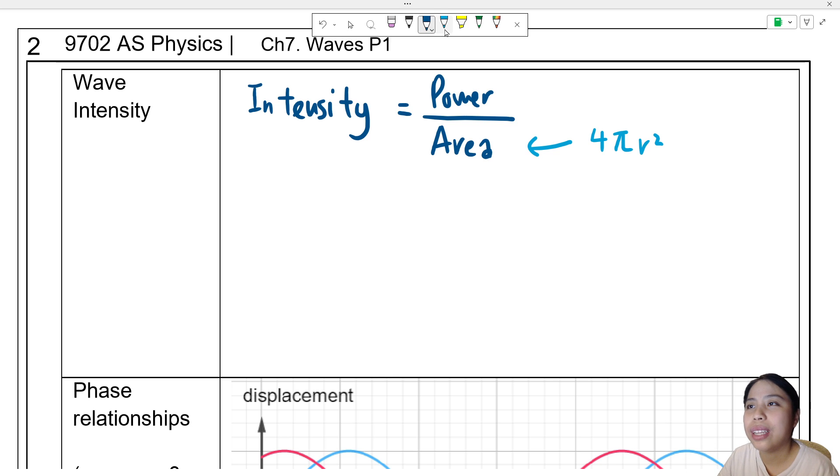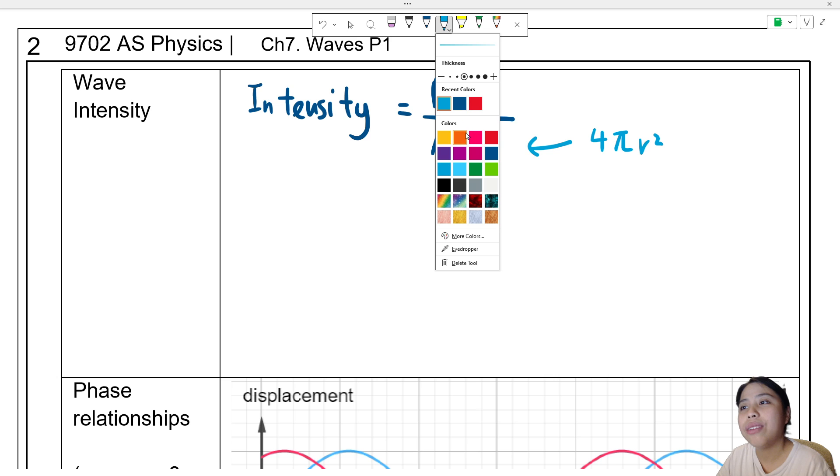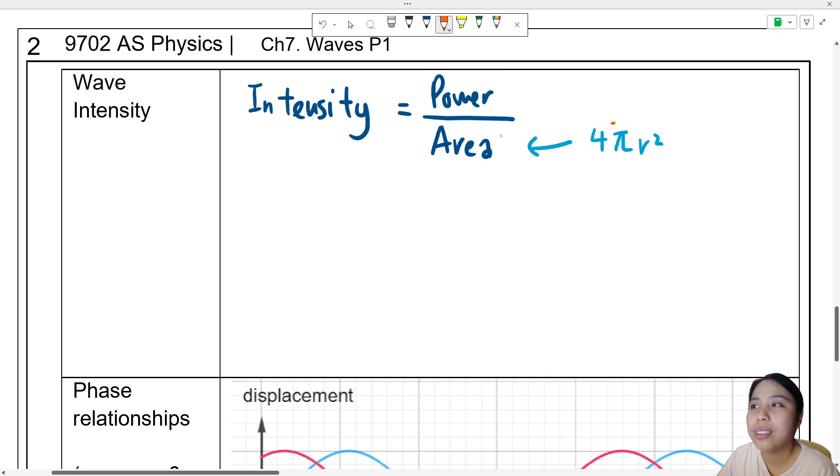Kind of have a rough idea of intensity. So based on this, you can actually write down the units for intensity. That's going to be watts power per meter squared over area. So number one, we need to know this.